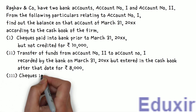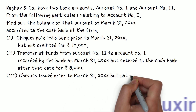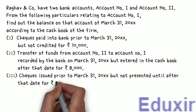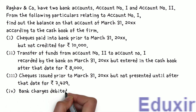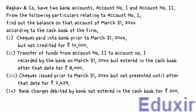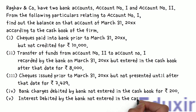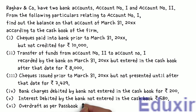Third, checks issued prior to March 31st, 2000+ but not presented until after that date, for 7,429 rupees. Fourth, bank charges debited by bank not entered in the cashbook, for 200 rupees. Fifth, interest debited by the bank not entered in the cashbook, 580 rupees. Sixth, overdraft as per passbook, 18,990 rupees.